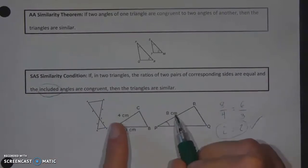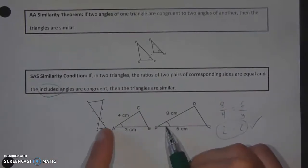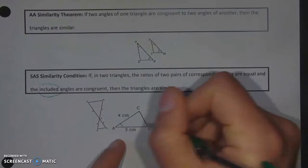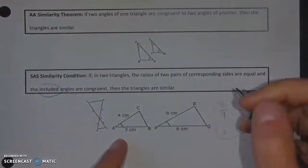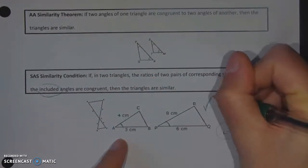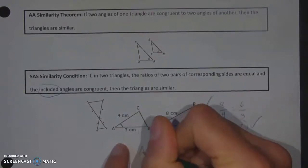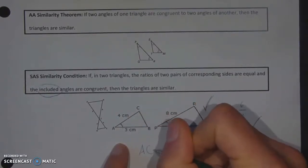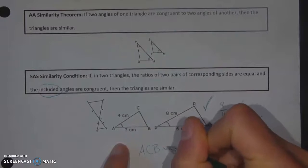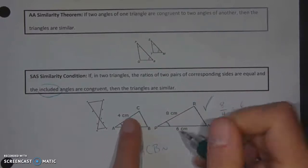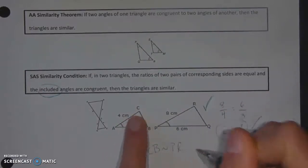Now, in order to use the SAS, I need the angle that is between the sides to be congruent, which it is. You can see the little congruency mark there. So that means that this one works, and these two would be similar triangles, not congruent. A, C, B would be similar to P, R, Q.